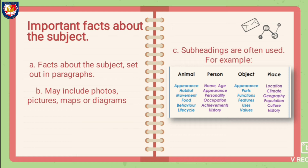For example, if you are going to write about an animal, you have six criteria: Appearance, Habitat, Movement, Food, Behavior, and Lifecycle.